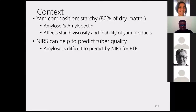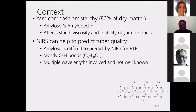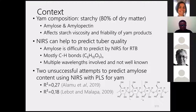NIR spectroscopy is one of the tools used today to predict tuber quality. However, using NIR to predict amylose content is very difficult for root tubers and bananas, possibly because the molecular structure of amylose is mostly constituted by C-H bonds, and many wavelengths involved in amylose molecular structure are not all known. Two previous authors tried to predict amylose content using NIR with the reference method partial least squares for yam, but they were not successful.